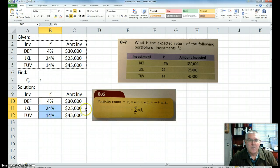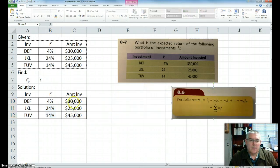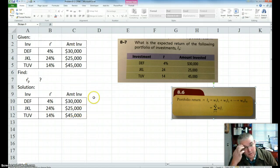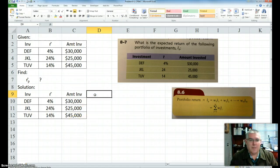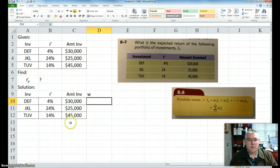So we have these. We don't have the weights, all we have is the amounts. So the weights are simply the proportion of the total investment that you have invested in there. Okay, so let me just show you, rather than talking about it, let me show you. So we want to find W, and W is just the portion of the total. So first we have to find the total.